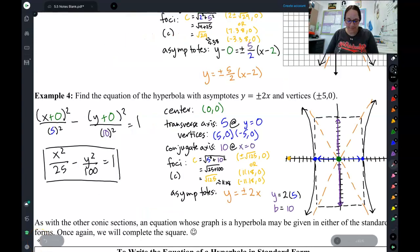Let's check and see how you did. So, first thing, I knew these were my vertices, which told me where my center was, right in the middle. And my transverse axis was 5 on each side.